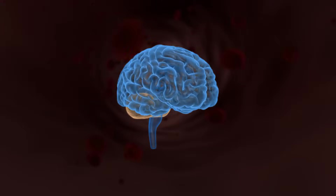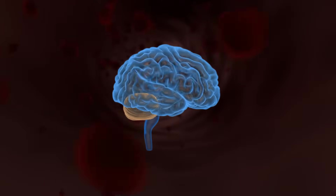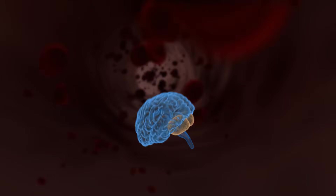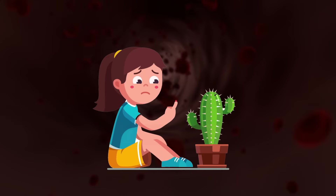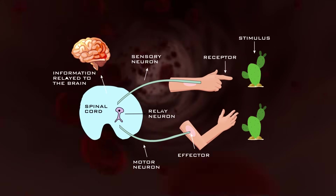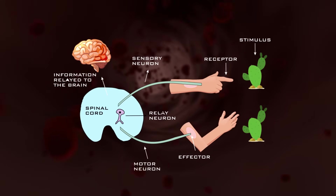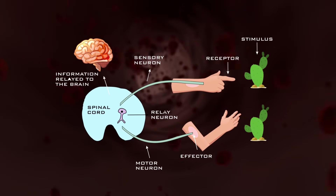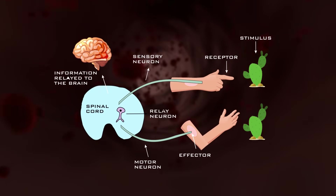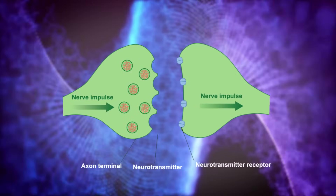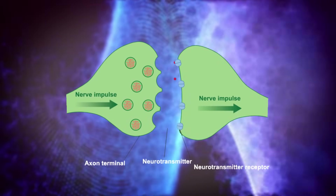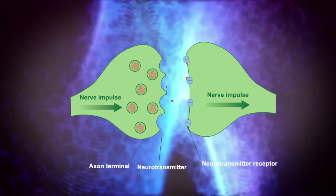Also be prepared to answer any question that asks you to explain how the nervous system coordinates a response. For example, if someone touches a painful stimulus, or the process of someone seeing an object — make sure you talk through all the stages from the stimulus to the receptor, to the sensory neuron, through the central nervous system, motor neuron, effector, and what response that elicits. Also be aware of small concepts such as what a synapse is — that's the connection between two neurons.